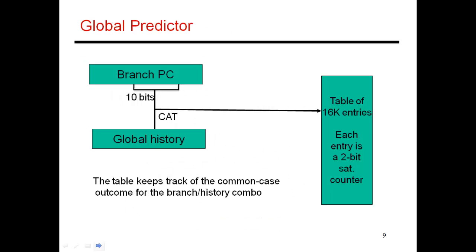And let me just show it to you in more detail over here. So in this example, I have a table of 16,000 entries. Remember that previously, I had 1K entries. And now for each branch, I want to allocate 16 different counters because I'm assuming a four-bit history.